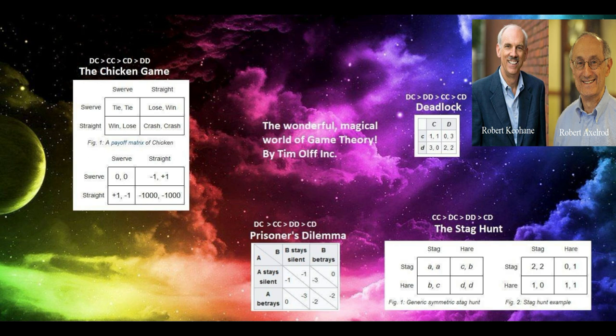In the prisoner's dilemma, imagine you are arrested and asked by the police to betray your fellow criminal. If you both betray each other, you both get five years in jail. If you both stay silent, you both get one year. If one betrays while the other stays silent, only one player gets ten years. Rationally, both would stay silent, but lacking knowledge of the other's intentions, both end up betraying each other.